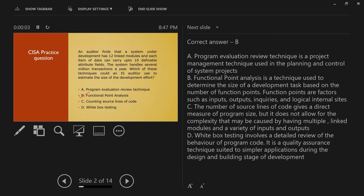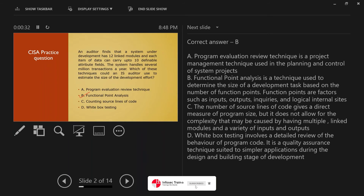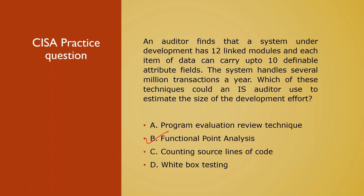Reading the justification: the correct answer is B. PERT is a project management technique used in planning and control of system projects. FPA is a technique used to determine the size of a development task based on the number of functional points — factors such as inputs, outputs, inquiries, and logical internal files. Source lines of code gives a direct measure of program size but doesn't account for complexity from multiple linked modules and varied inputs/outputs. White box testing is a quality assurance technique suited to simpler applications during the design and building stage.